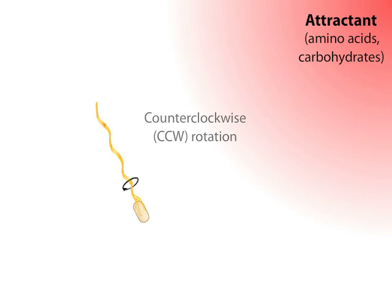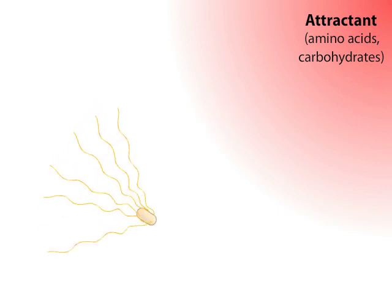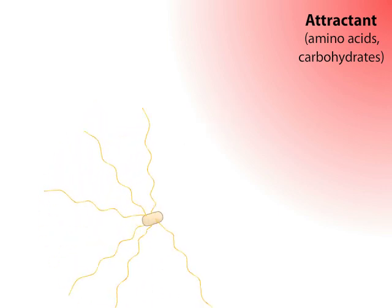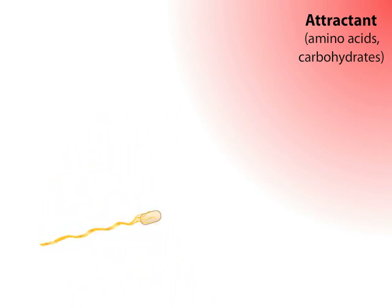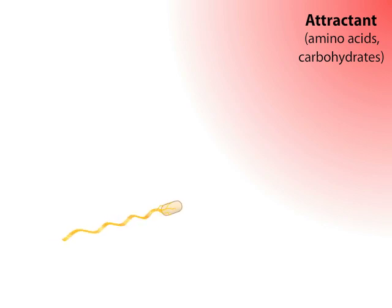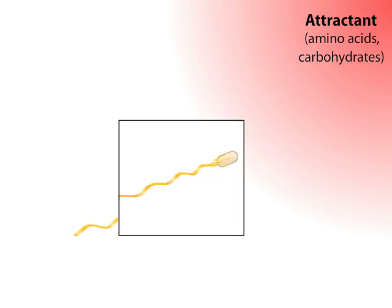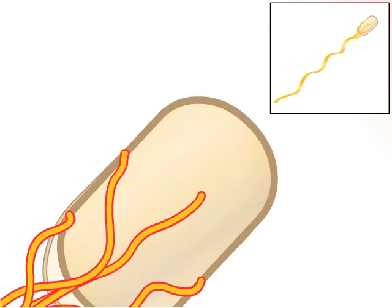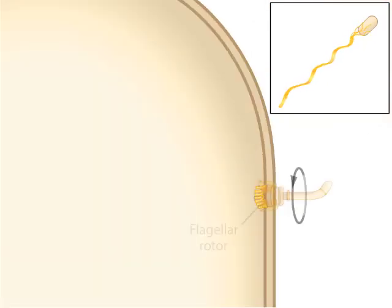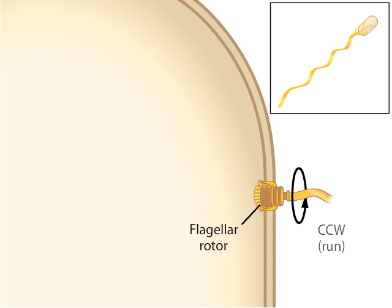If the flagella rotors suddenly switch to a clockwise rotation, the bundle is disrupted and the bacterium tumbles in a random fashion. Once the rotors switch back to a counterclockwise rotation, the bacterium will have reoriented itself, changing its swimming direction.